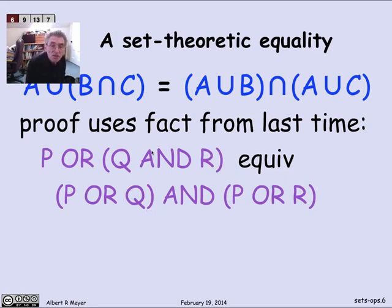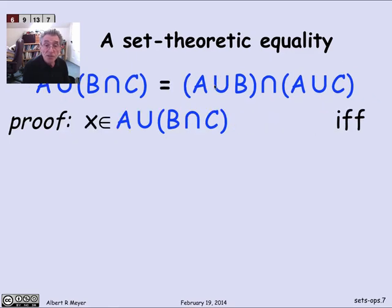You can see this equivalence in purple has the same structure as the set theoretic equality in blue, except that union's replaced by or and intersection's replaced by and. And set variables ABC is replaced by propositional variables PQR. So let's just remember that we've already proved this propositional equivalence, and we're going to make use of it in the middle of this proof that these two sets are equal.